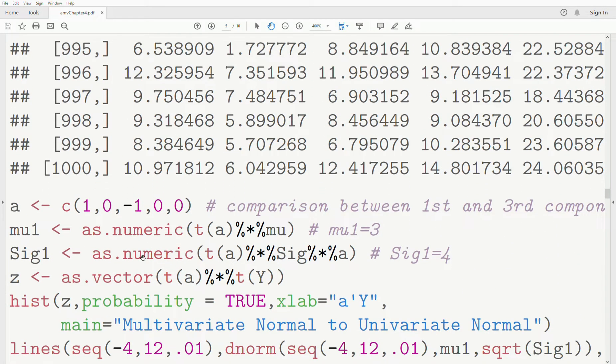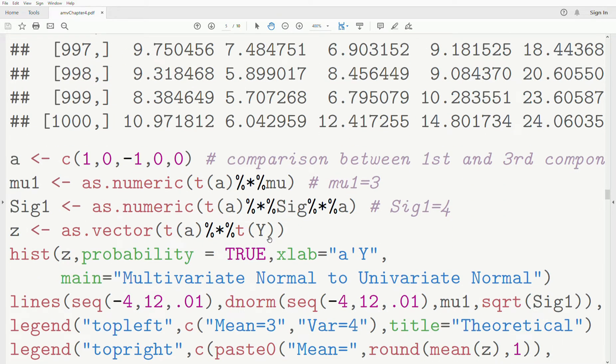The transformation we're going to look at is A, this vector 1, 0, minus 1, 0, 0. So this is actually a comparison between the first and third components. The mean is A transpose mu. Now remember, since this is matrix multiplication, it tries to keep it in a matrix format. Since it's a one by one matrix, I want to force it to a number, so that's what the as numeric out front is. And it should create mu 1 is 3. Then to do the variance, A transpose times sigma times A, and then I force it to be a number as opposed to that matrix format. So sigma 1.